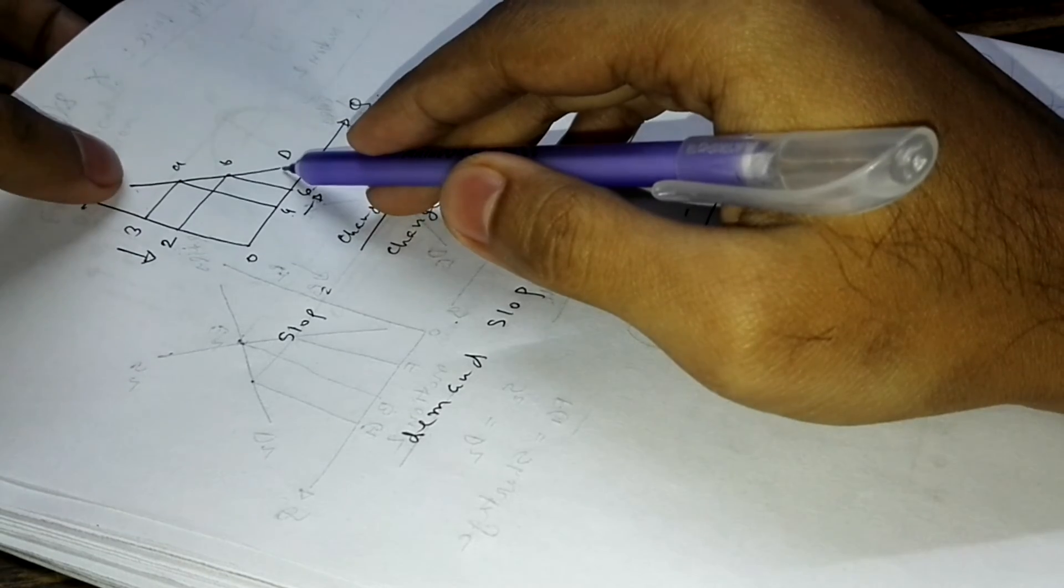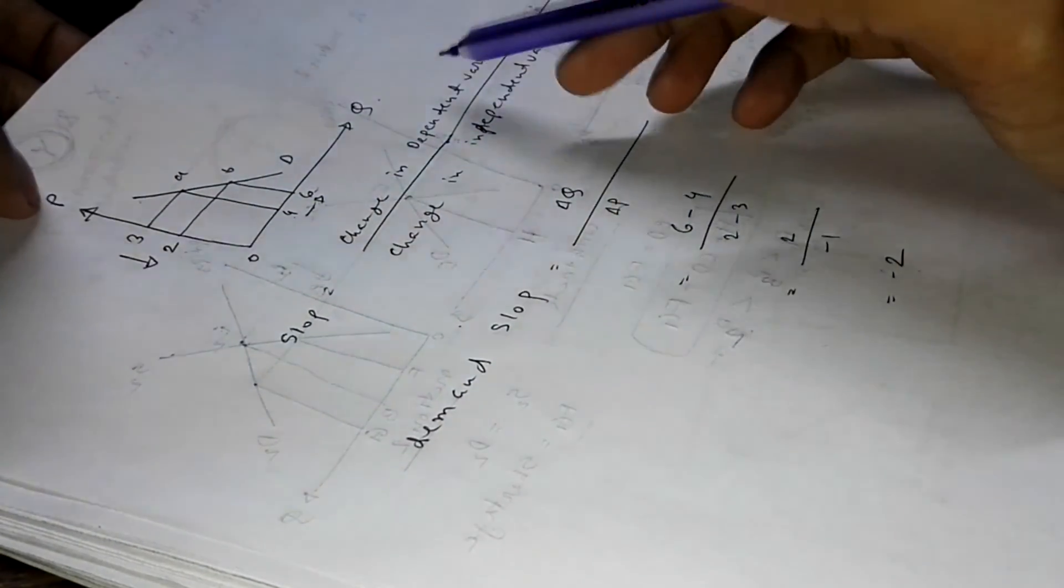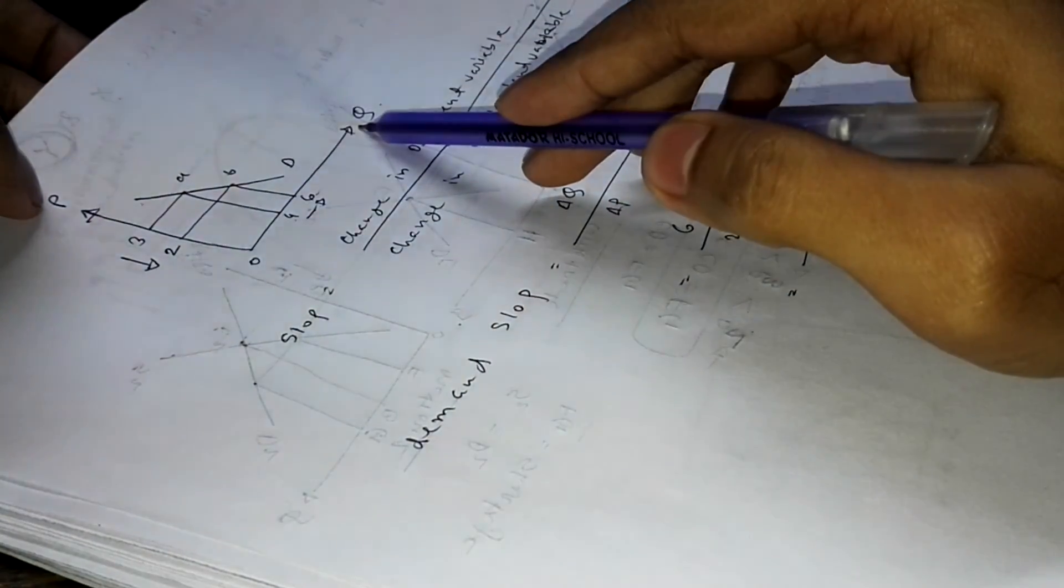And our demand curve is downward sloped also, and it also represents that there is a negative relationship between price and quantity demanded.